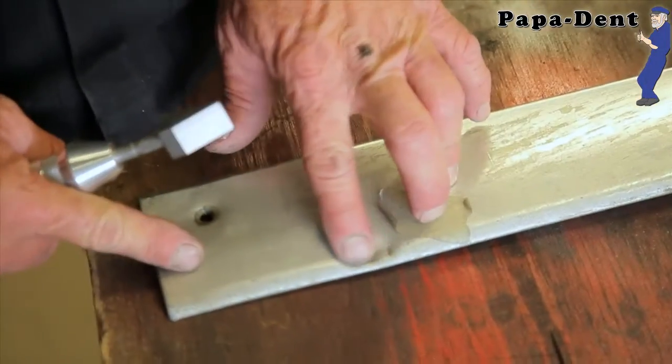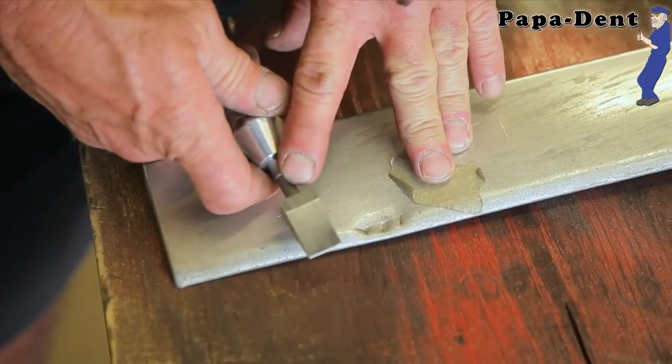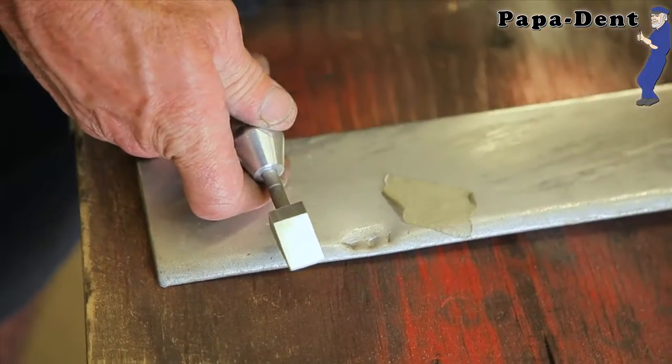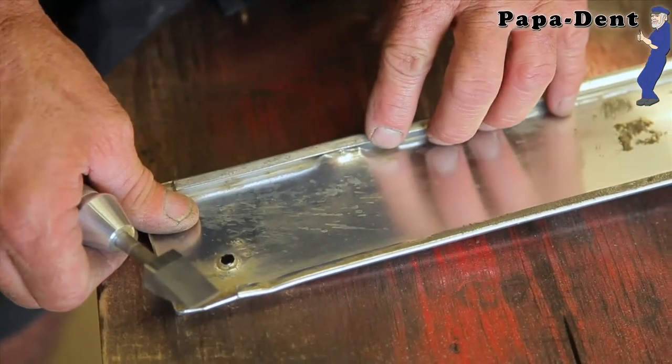We have a dent here in this rocker molding, which is pretty heavy, and we're going to put our chisel bit to the test on this one. Let's just go ahead and roll it over. We can identify our dent.